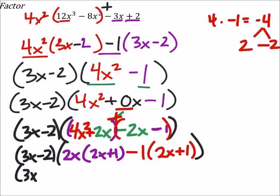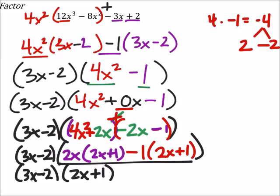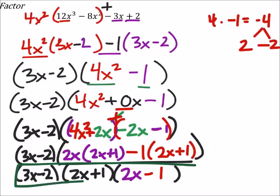We've got the three x minus two. And then we're going to factor out that two x plus one from both of these two terms. And then we just have whatever was left over, which was the two x minus one. And as far as I can tell, that is as far as it goes for factoring this one.